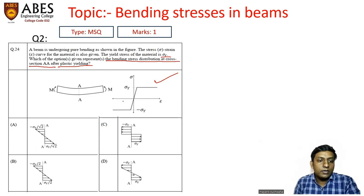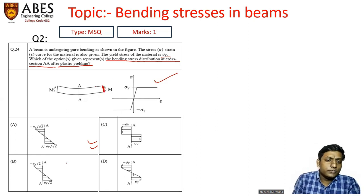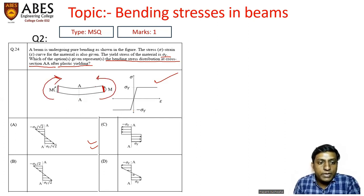So in this question you are supposed to tell what will be the diagram of stress distribution over the cross section which is over here. From the figure we know that this beam is bent because of this bending moment. So naturally the upper layer would be subjected to compression and the lower layer would be subjected to tension.